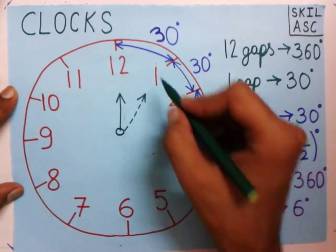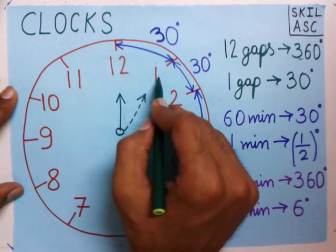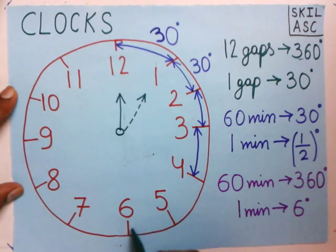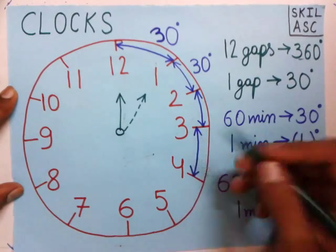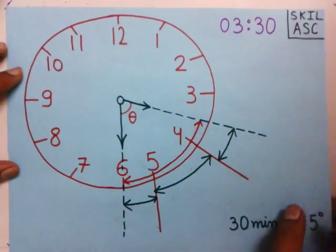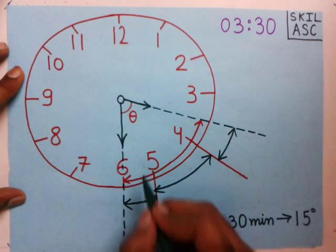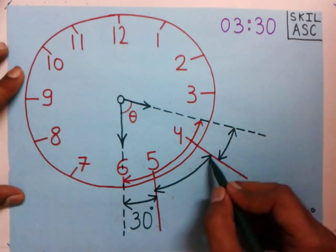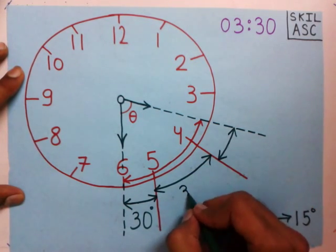For example, the gap between 12 and 1 is 30 degrees. Similarly, the gap between 5 and 6 is 30 degrees, and the gap between 3 and 4 is also 30 degrees. Notice this angle — it is also the gap between 4 and 5, so it is also 30 degrees.